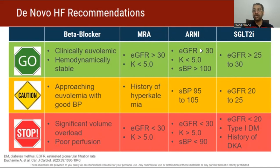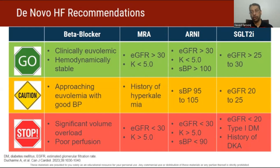For ARNI, again, GFR greater than 30, potassium less than 5, and systolic blood pressure at least 100. With caution if blood pressure is borderline or there is a past history of hyperkalemia. If clearly hyperkalemic, with low pressures and reduced GFR, don't start.